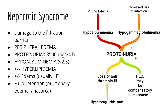Other kinds of proteins that are lost are gamma globulins. These are important in protecting the body from infections or for immunity, so you have an increased risk of infection in nephrotic syndrome. Other proteins you may lose are antithrombin 3, which may explain why people with nephrotic syndrome may have hypercoagulable states. There also seems to be hyperlipidemia, which may be a compensatory response in nephrotic syndrome.